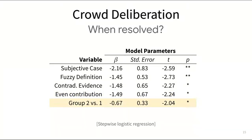Surprisingly, we also saw that groups with an initial consensus level of two versus one — meaning that two workers agreed with each other and a third worker disagreed with them — resolved their disagreements less often than groups with just two workers disagreeing with each other.